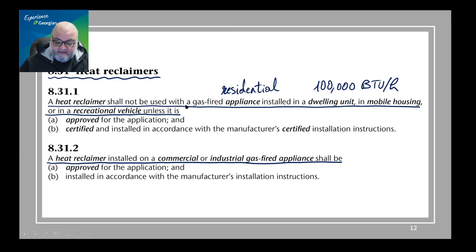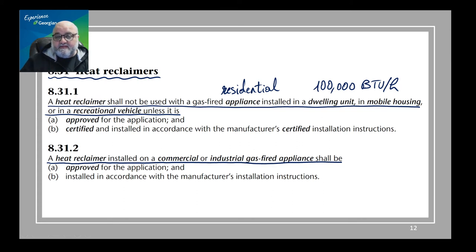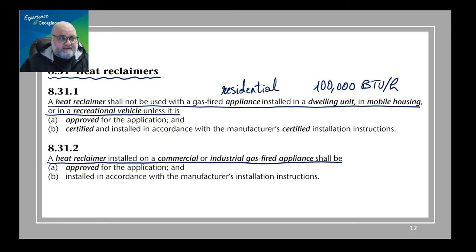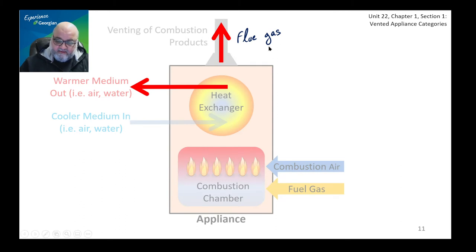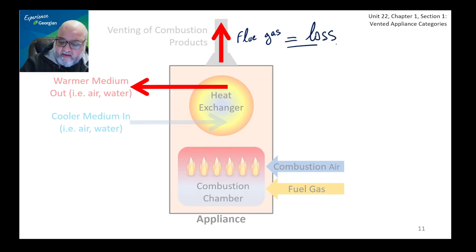In non-residential applications, we're talking about appliances that can go into millions of BTUs per hour. That much heat generation will definitely have a lot of flue heat in it. That's why we use heat reclaimers — we can reclaim a lot of the heat being lost through the flue. Because let's be honest, this is loss — we're dumping it into the atmosphere without making any use of it.